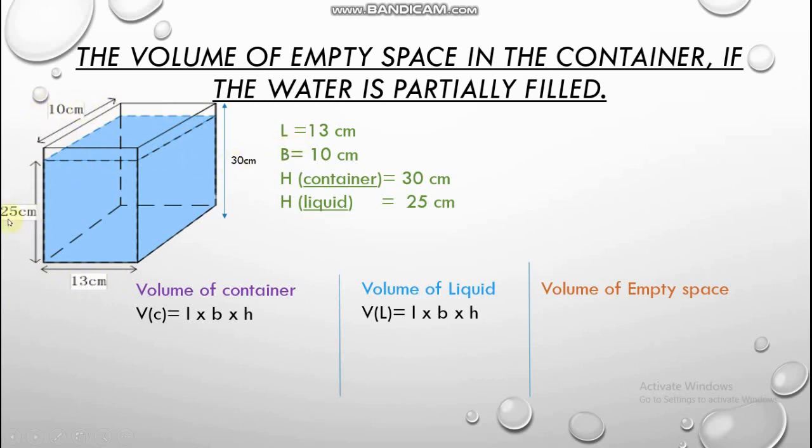There is another height appearing on it which is 25 cm, the height of liquid. Now for finding the volume of empty space above the water line we will discuss two methods. In the first method we will first take out the volume of container by applying the formula length into breadth into height.